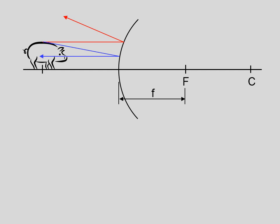There are only two rays required to find our image. We look at our reflected rays — this one up here with the arrowhead and this one down here with the arrowhead — and we ask: do those converge? Clearly the answer is no. If they don't converge, we project the reflected rays behind the mirror. Don't project the incident rays back; you project the reflected rays back. And there is our image.